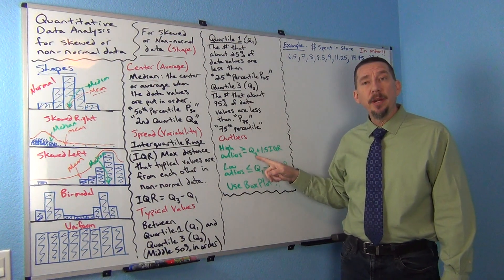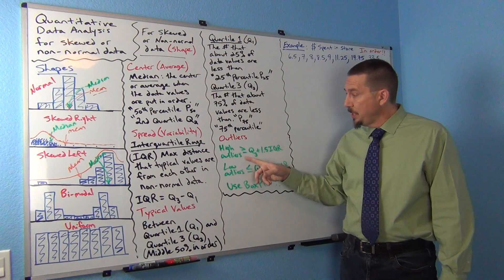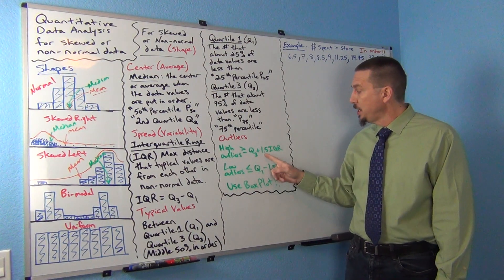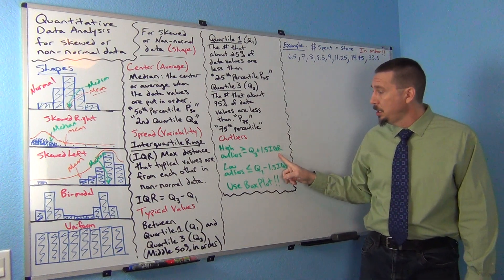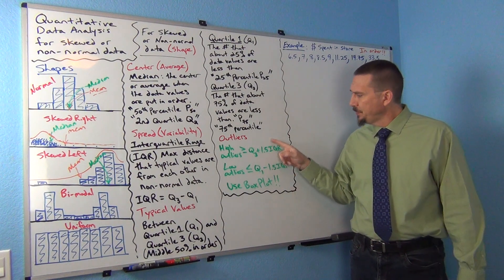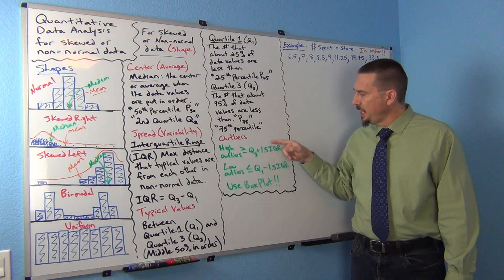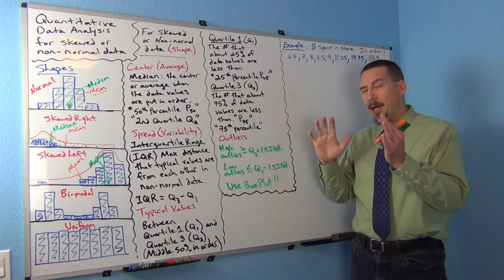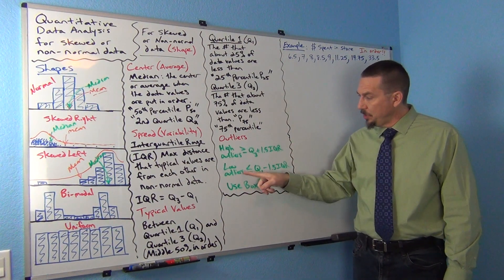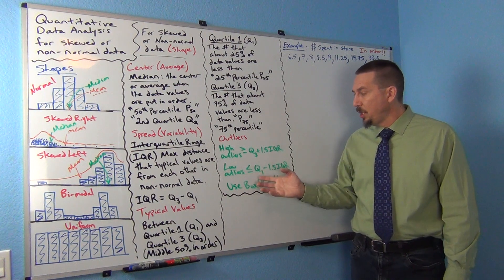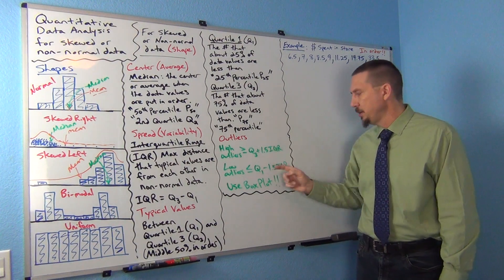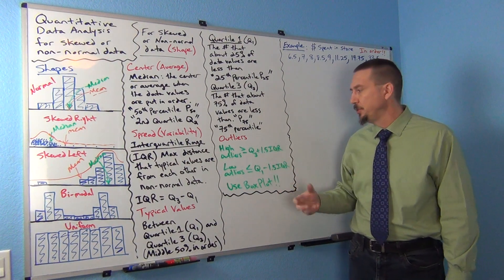The cutoff point that computers use in the box plot: high outliers will be anything above quartile 3 plus 1.5 IQR. It's always 1.5 - think of it as the box and a half. And low outliers will be anything below Q1 minus 1.5 IQR. These are the cutoffs for the high outliers and low outliers for non-normal data.